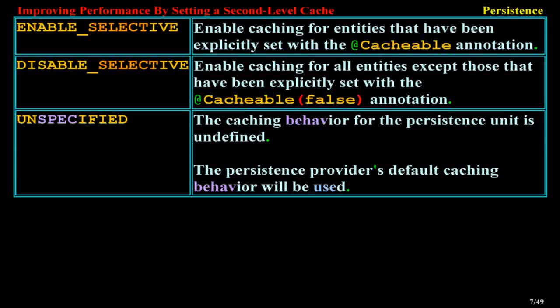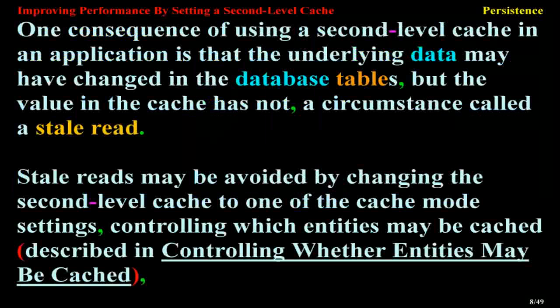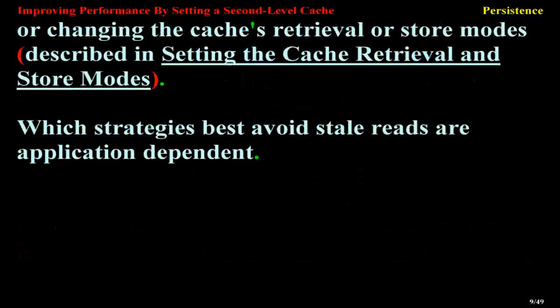The Persistence Provider's default caching behavior will be used. One consequence of using a second-level cache in an application is that the underlying data may have changed in the database tables, but the value in the cache has not — a circumstance called a stale read. Stale reads may be avoided by changing the second-level cache mode settings, controlling which entities may be cached, or changing the cache's retrieval or store modes.